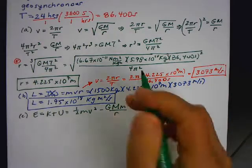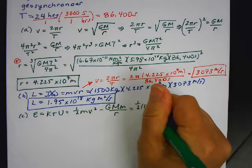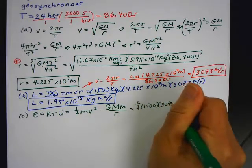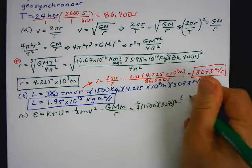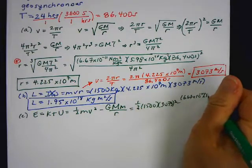Now, you can either substitute in all those values here. 1,500, 3073 squared minus 6.67 times 10 to the negative 11, 5.98,